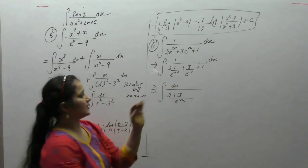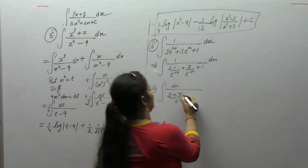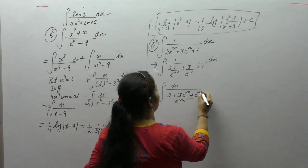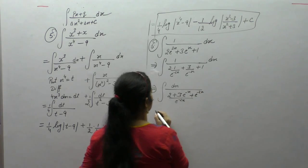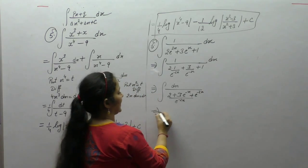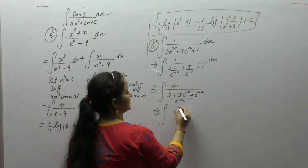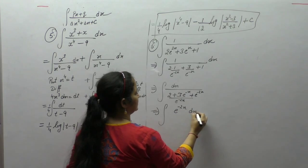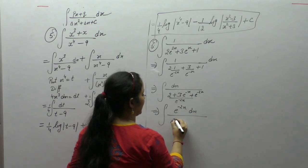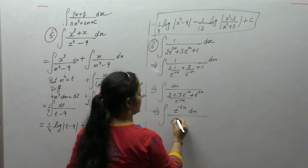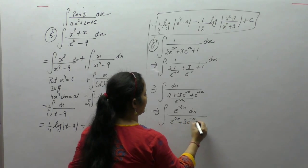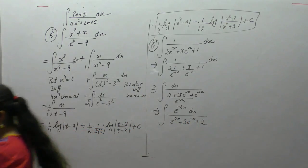We want E^(-2x) here. So 3 into E^(-x) plus E^(-2x). Write E^(-2x) in the numerator. The denominator becomes E^(-2x) plus 3 into E^(-x) plus 2.